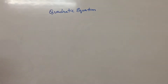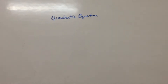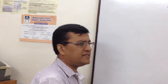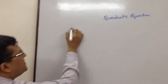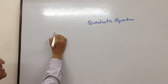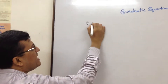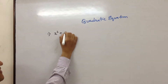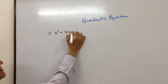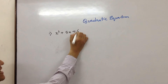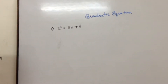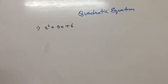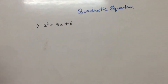I have seen that students find it a bit difficult in factorizing it. It's very very simple. If somebody has to tell me a simple quadratic equation, say x squared plus 5x plus 6. How to factorize a quadratic equation?